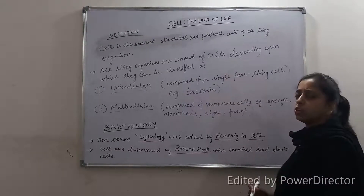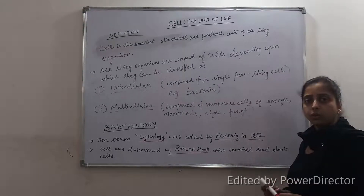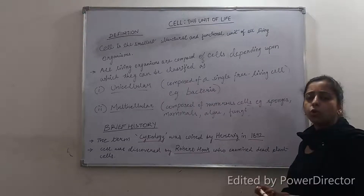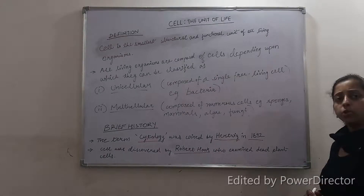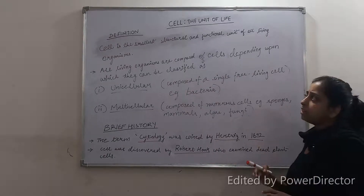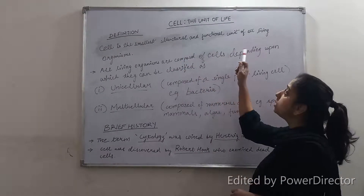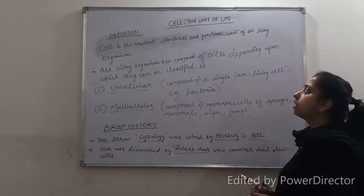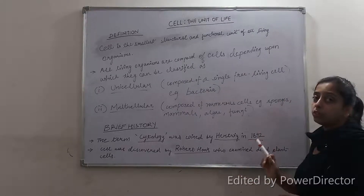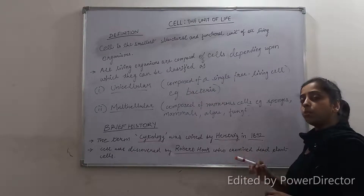Now, definition — what is the cell? We have seen a number of organisms around us: human beings, plants, dogs, and so many animals. All these organisms are composed of cells. The definition of the cell is: cell is the smallest structural and functional unit of all living organisms. All living organisms are composed of cells, and depending upon that, they can be classified as unicellular or multicellular.